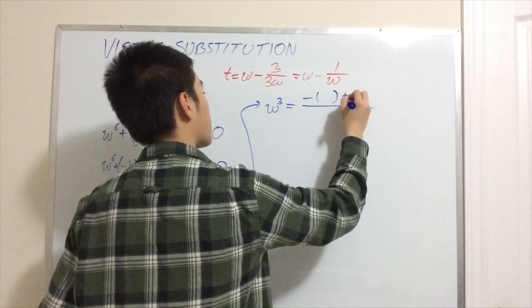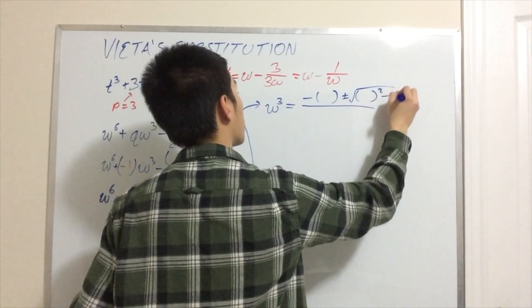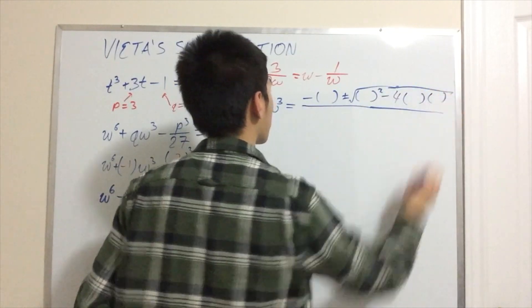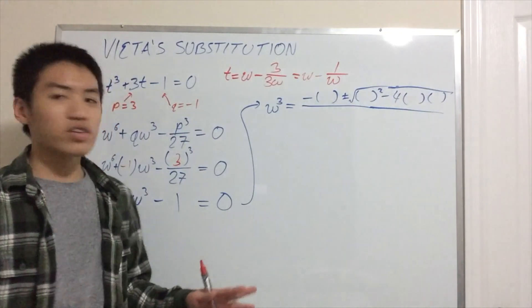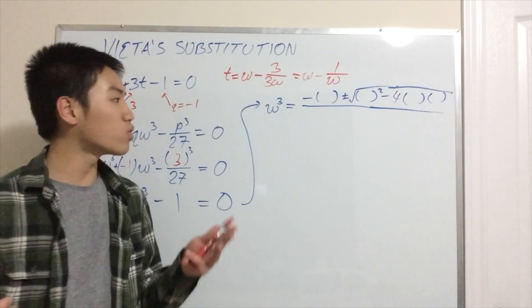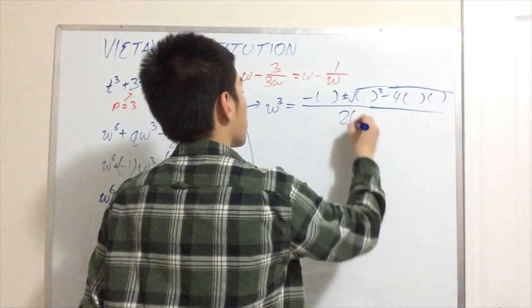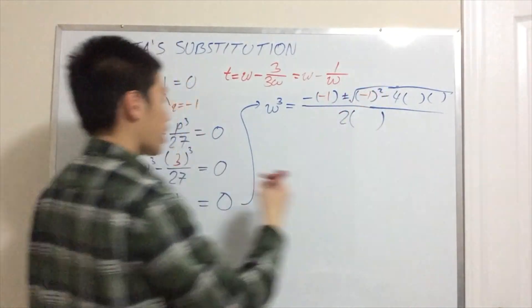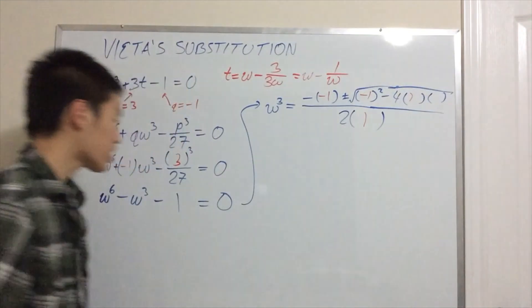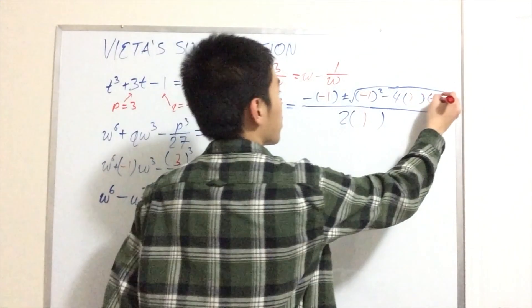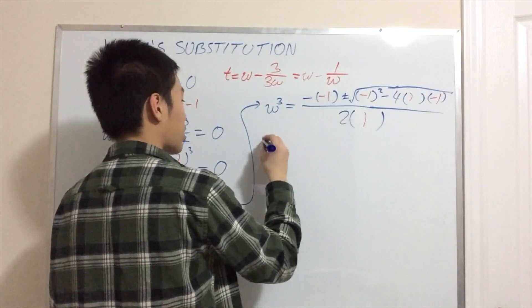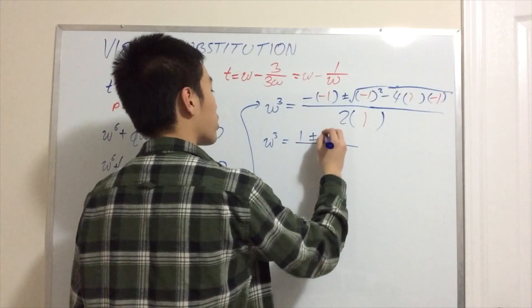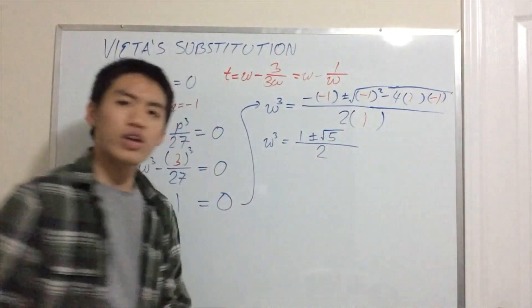So, we have -b ± √(b² - 4ac). Nice formula. A lot easier than the cubic formula. In fact, I wouldn't recommend learning the cubic formula because it's just way too unwieldy. We'll plug in our coefficients. b is negative 1. Here it goes, here it goes. a is 1. Plug it in here and there. And finally, we have c, which is negative 1. I'm going to simplify this in one step and we can say w³ = (1 ± √5)/2.